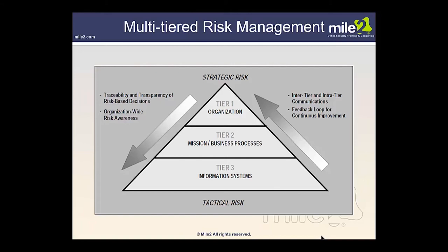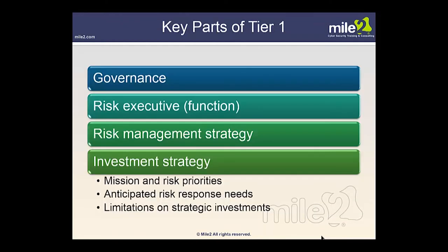As we step through risk management, we examine risk at all levels. The risk management process is carried out seamlessly across three tiers with the objective of continuous improvement in risk-related activities and effective inter-tier and intra-tier communication among stakeholders sharing interest in the mission and business success of your organization. Tier one addresses risk from an organizational perspective — looking at strategic risk — tier two addresses mission and business processes, and tier three covers information systems.